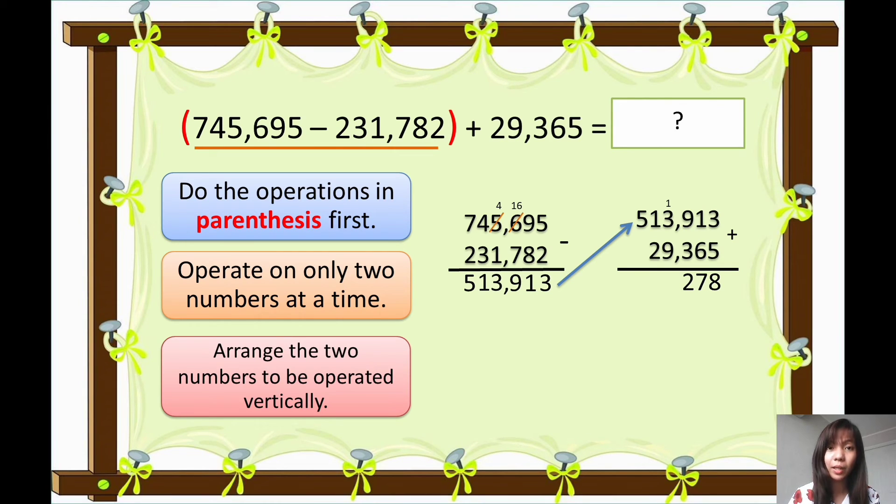3 plus 9, how much? 12, plus 1, 13. So 3, carry 1. Then 1 plus 2 is 3, plus 1 is 4. Then bring down 5.